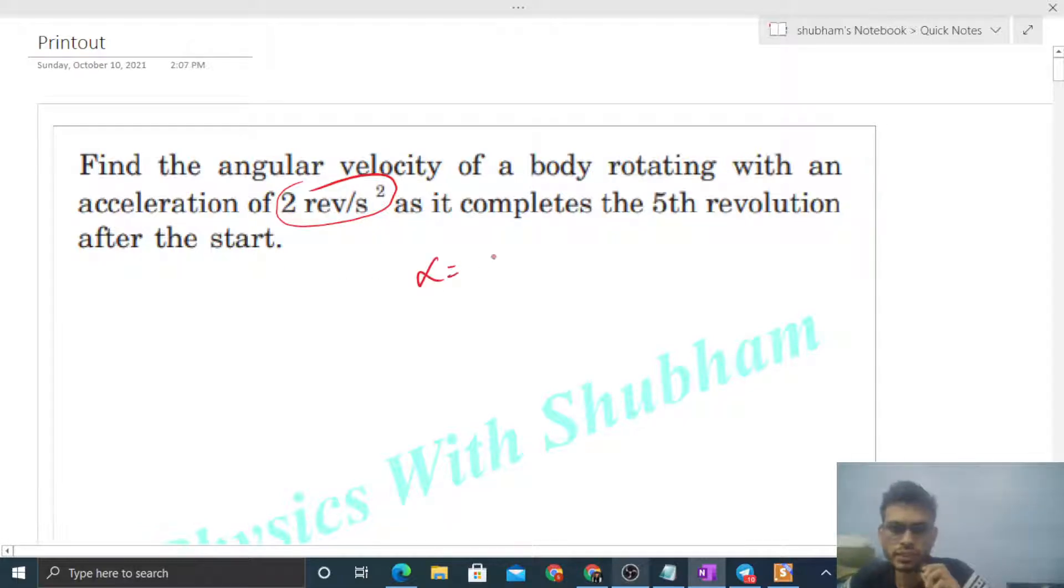What is given? Angular acceleration is 2 revolutions per second square. One revolution means 2π radians, so alpha will be 4π radians per second square. It starts from rest, so initial angular velocity will be 0, and it completes the fifth revolution, which means theta will be 10π.